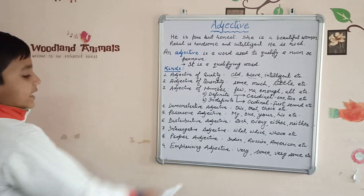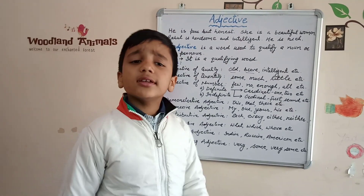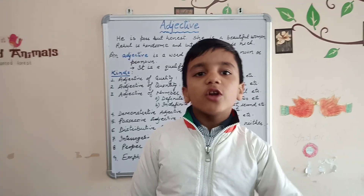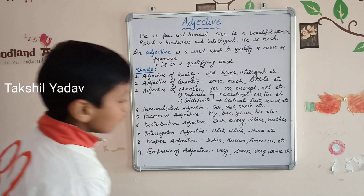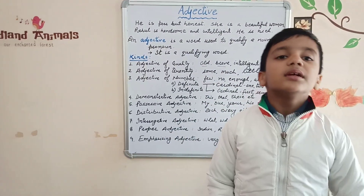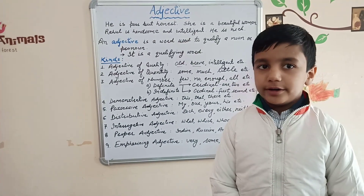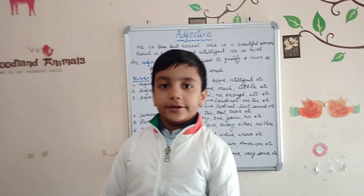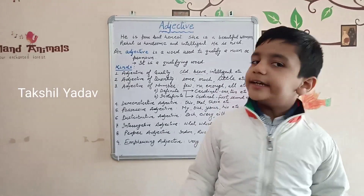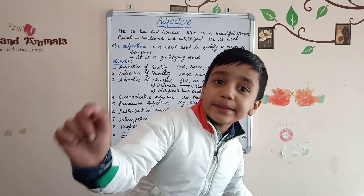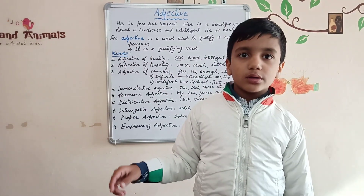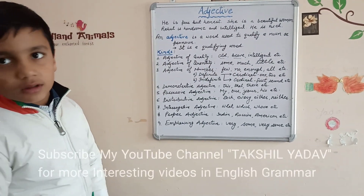Nine, emphasizing adjectives. The adjectives that are used to show emphasis are known as emphasizing adjectives. For example: very, same, very same, own. For example, 'This is the very book that I wanted.' If we say 'This is the book that I wanted,' it is a simple sentence with no emphasis. But if we say 'This is the very book that I wanted,' it shows emphasis on the book. So it comes under emphasizing adjectives.